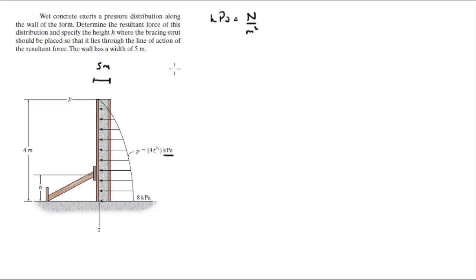They give you the pressure so p is equal to 4z to the 1/2 kPa. But if you know the thickness of the wall to be 5 meters, you can multiply it by 5 times 4z to the 1/2. And if you multiply it by 5 meters and this is over meter squared, it will give you newtons per meter, which is newtons per meter of pressure. So this will be 20z to the 1/2.